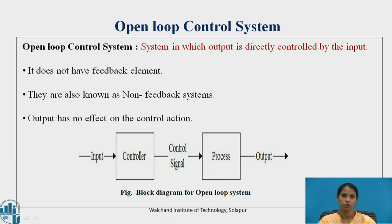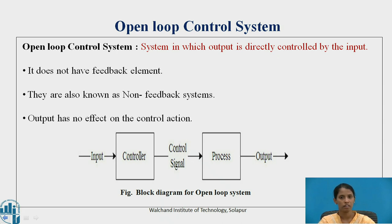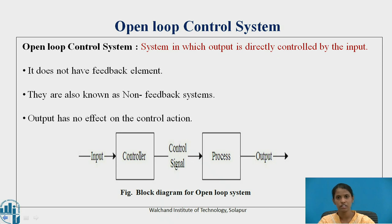What is an open loop control system? It is a system in which output is directly controlled by the input. It does not have any feedback element, so these systems are also known as non-feedback systems. Output has no effect on the control action, and there is no comparison of output with the input — input is simply processed and given as output. External disturbances are not taken into account.